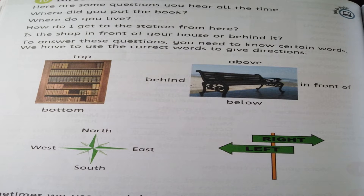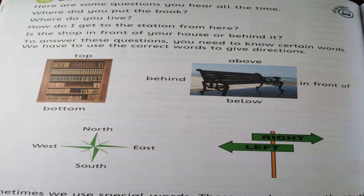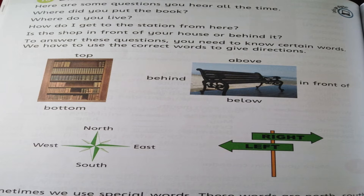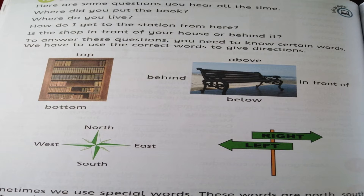Top means kisi cheez ka upar wala hissa — the highest or uppermost point, or we can say the peak. For example, the top of the mountain. Bottom means kisi cheez ka neeche wala hissa.